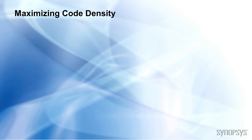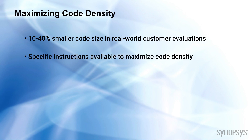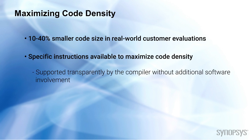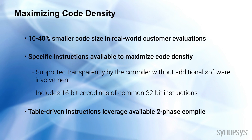Code density is important in embedded applications and the ARC ISA has been developed to significantly reduce code size. This is available on both EM and HS processors and is automatically managed by the compiler without additional user involvement. The ARC ISA includes 16-bit and 32-bit instructions that the compiler selects automatically to maximize performance and minimize code size. The compiler uses a two-pass approach that takes advantage of patented capabilities to reduce code size.